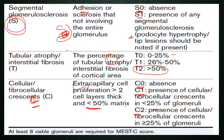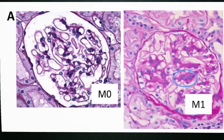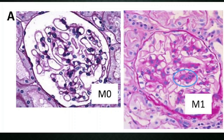An important point to note is that at least eight glomeruli have to be ideally seen to adequately report this MEST-C score. Remember the number eight — eight glomeruli are required to adequately report the MEST-C scoring system. We will now see a few histopathological images related to this scoring.